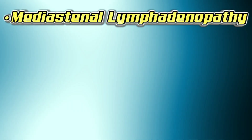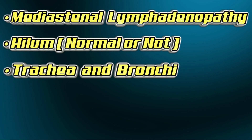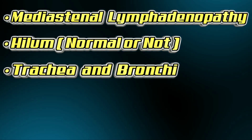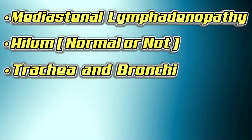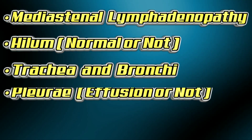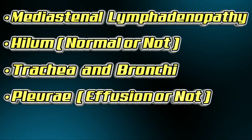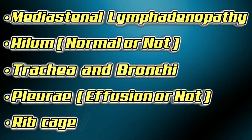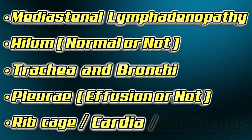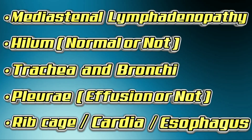Other findings could include mediastinal lymphadenopathy, description of the hilum, and whether the trachea or major bronchi are normal or not. There is also an assessment of both the pleura, especially for any signs of effusion. You will also find descriptions about the ribcage, cardiac structures, and esophagus in your report.